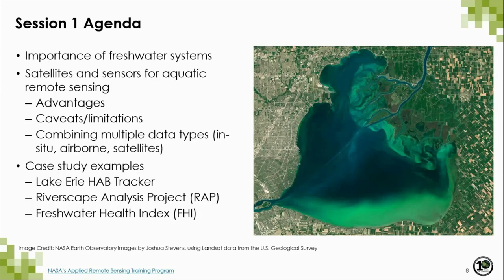Here's a summary of today's session. First, we're going to talk about the importance of freshwater ecosystems, what is ecosystem vitality, what are some ecosystem services, and why there's a need to study these ecosystems from a remotely sensed perspective. Then we will talk about different NASA Earth observations used for aquatic remote sensing, their advantages and limitations. Towards the end of the session, I will introduce some examples of tools available for analyzing freshwater ecosystems and their ecology.